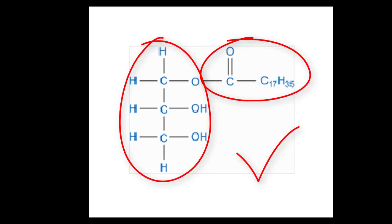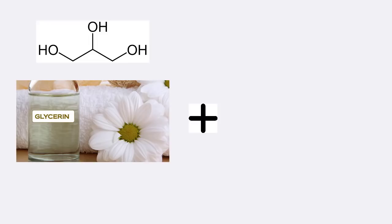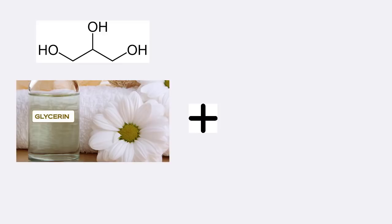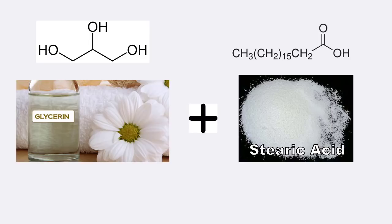Now let's consider how exactly it's made. In a typical process, glycerin is combined with stearic acid to make glycerol stearate. Glycerin itself can be made from chemical reactions involving plant oils, animal fats, and less commonly petroleum. Meanwhile, stearic acid is a fatty acid found in both plants and animals.